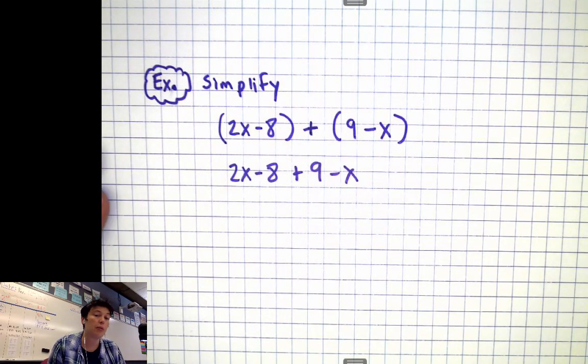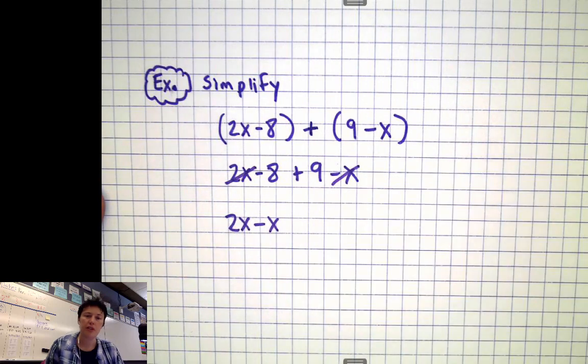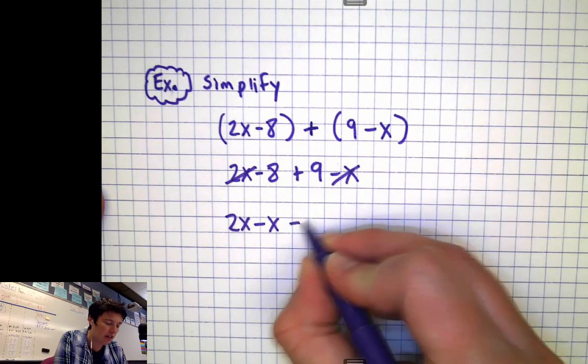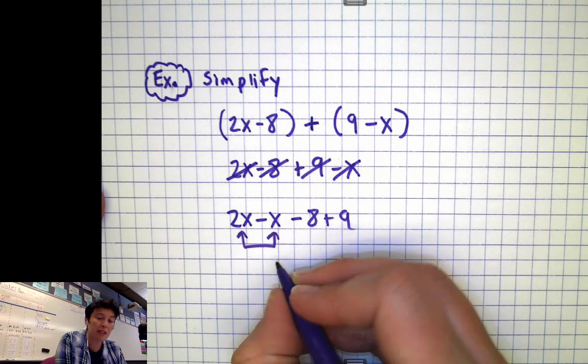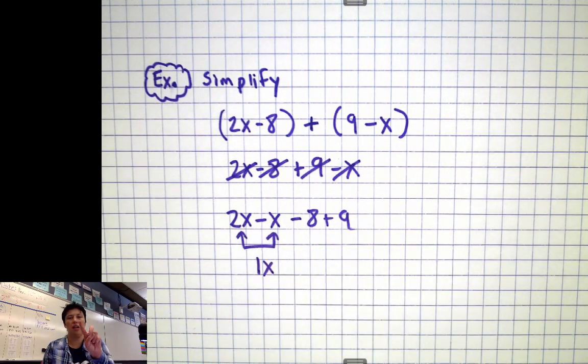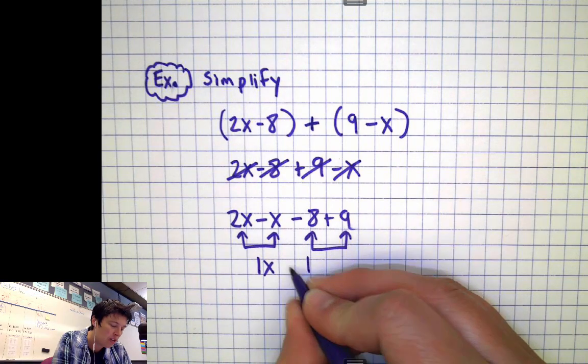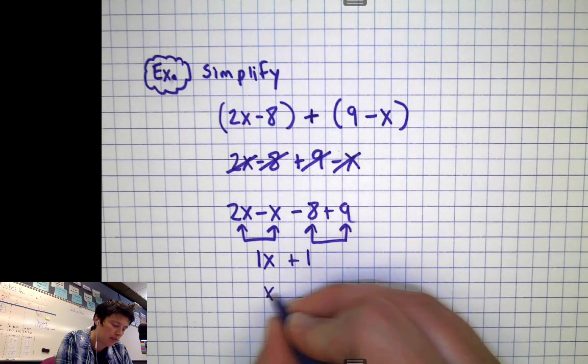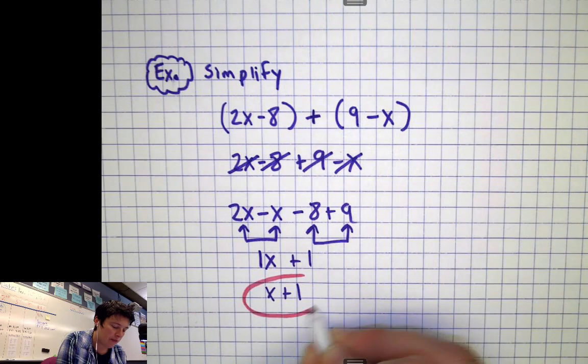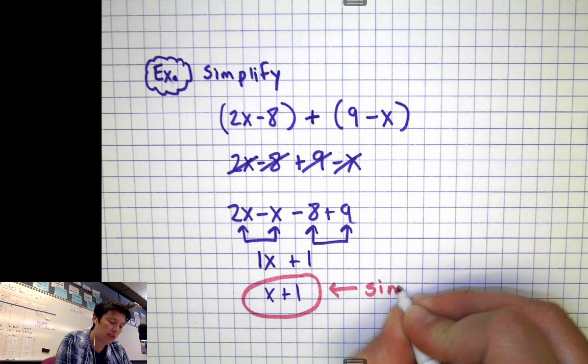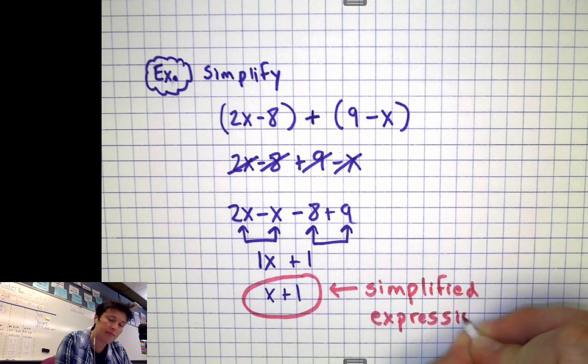I'm just going to change this to 2x minus 8 plus 9 minus x. And then I'm going to do what we did in the last example where we combine like terms. So I'm looking at the 2x and the minus x thinking, those probably should go together. They are like terms. They're the same thing. And then the negative 8 plus 9. I'm going to rearrange this problem a little bit. And then I'm just going to combine things together that go together. 2x minus x is 1x. And negative 8 plus 9 is different sign subtract. So 9 take away 8 is 1. So we get 1x plus 1. Or better yet, why don't I just write x plus 1. And there's our solution. That's our simplified expression. So I circle it. It's not really a solution. It's more of a simplified expression. And then I'm done.